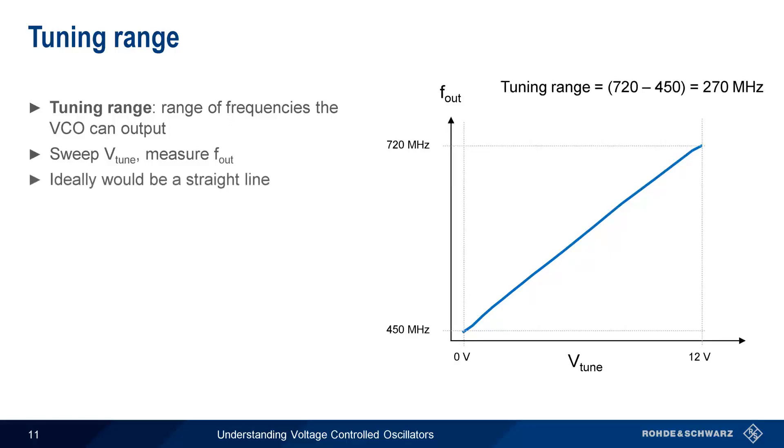Ideally, the plotted line would be straight or have a constant slope, something we'll come back to shortly. Note too that although VCO output frequency is supposed to be purely a function of the tune voltage, there are other factors that can affect output frequency. Two of the more important ones are frequency pushing and frequency pulling, so let's take a few moments to go over each of these.